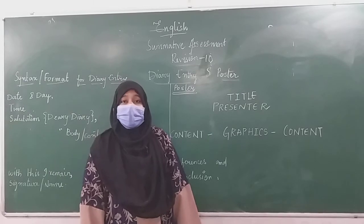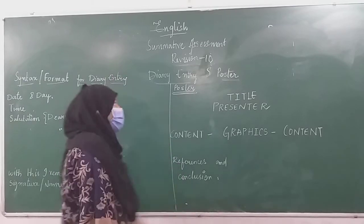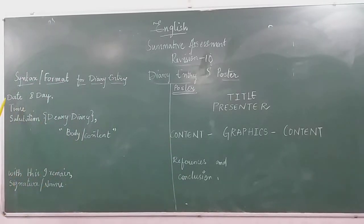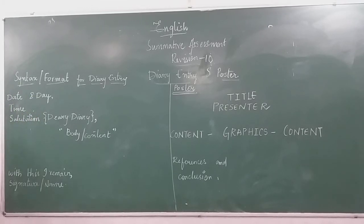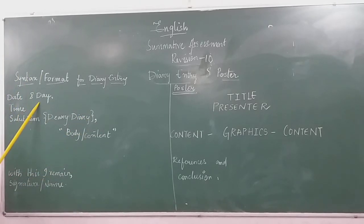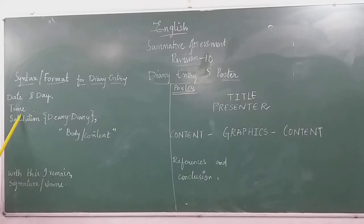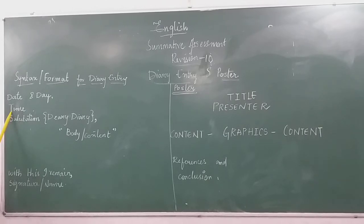So how do we write a diary entry? A diary entry always starts with day and date. Suppose today's date is XYZ March 2021 and the day is say Wednesday, Thursday, or Friday respectively. Now, time is optional — either you can write it or you can avoid it.